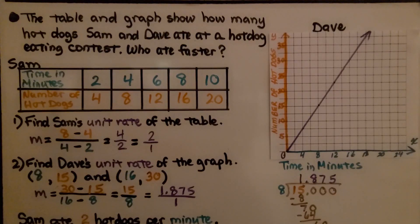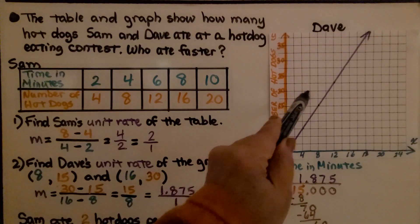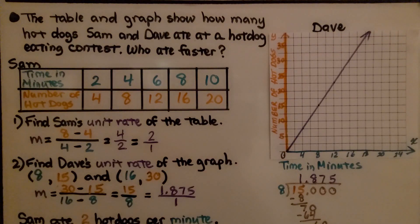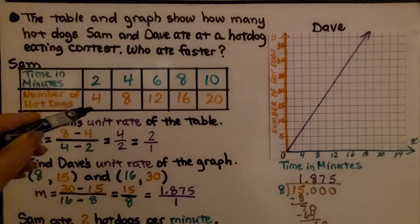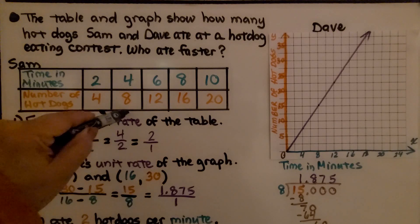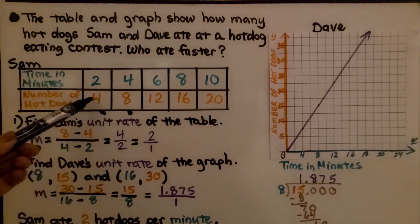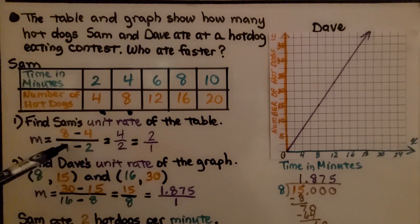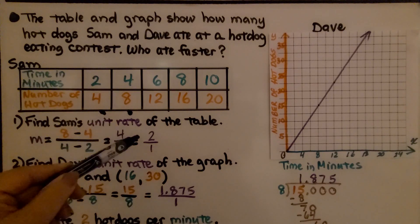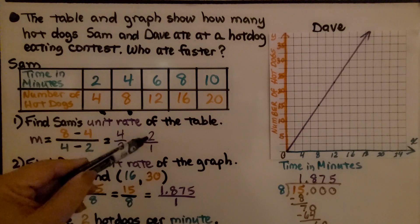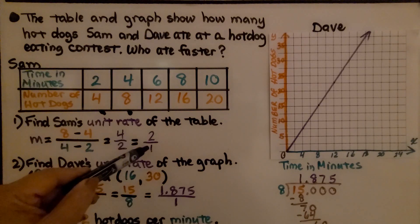Here we have a table and a graph showing how many hot dogs Sam and Dave ate at a hot dog eating contest, and we need to determine who ate faster. First, we find Sam's unit rate from the table. Choosing two points and applying the slope formula: 8 minus 4 over 4 minus 2, we get a slope or rate of change of 2 over 1.